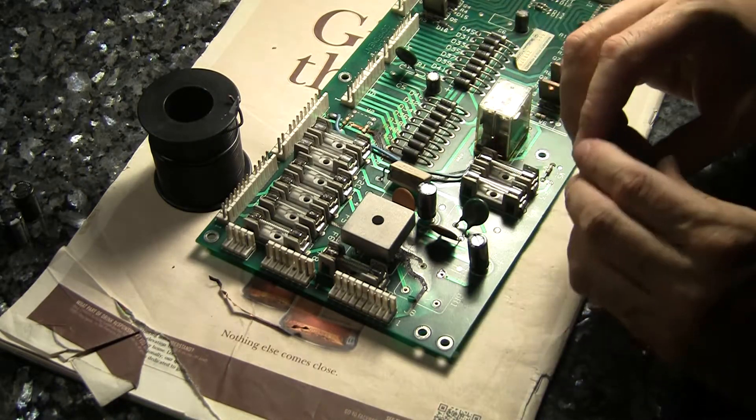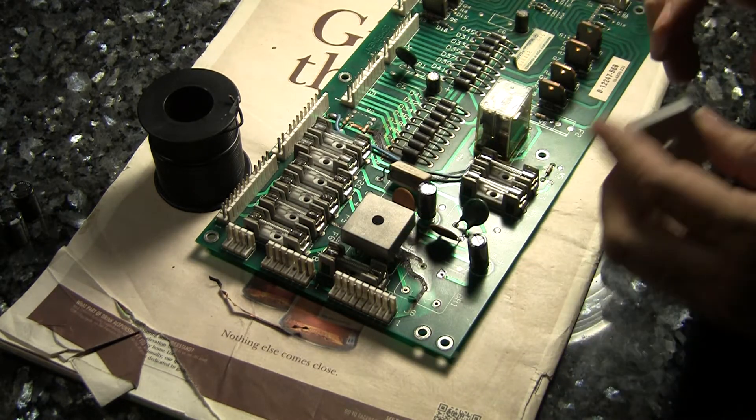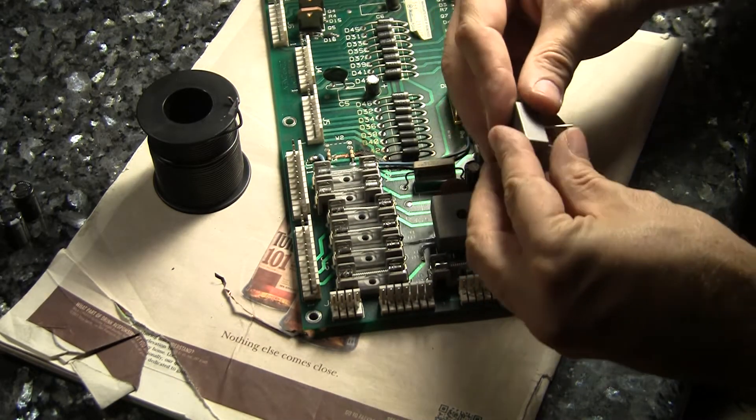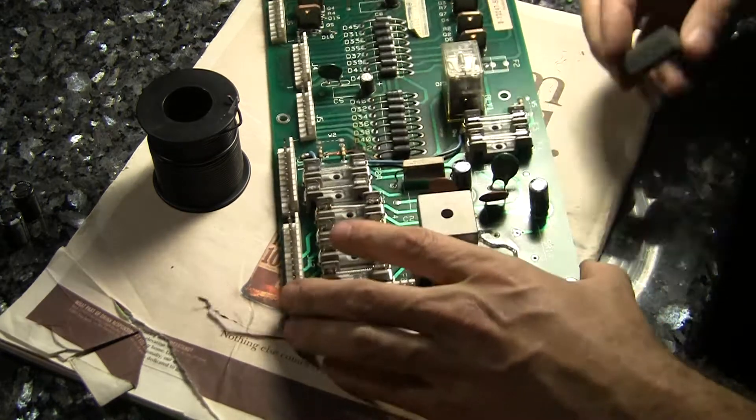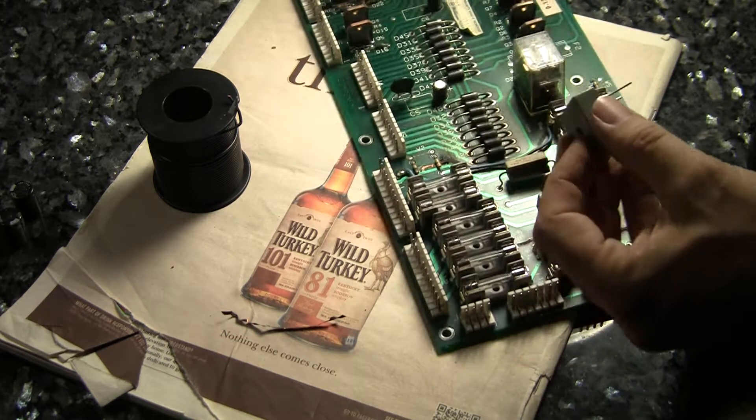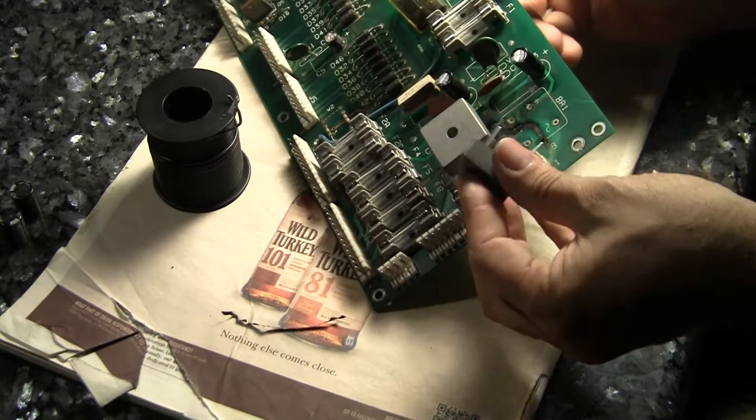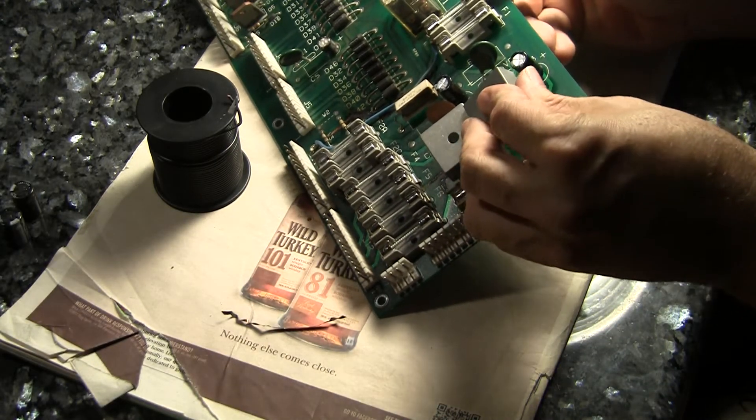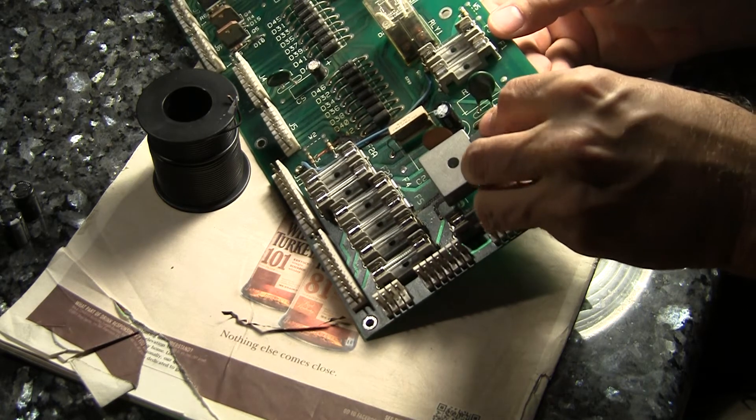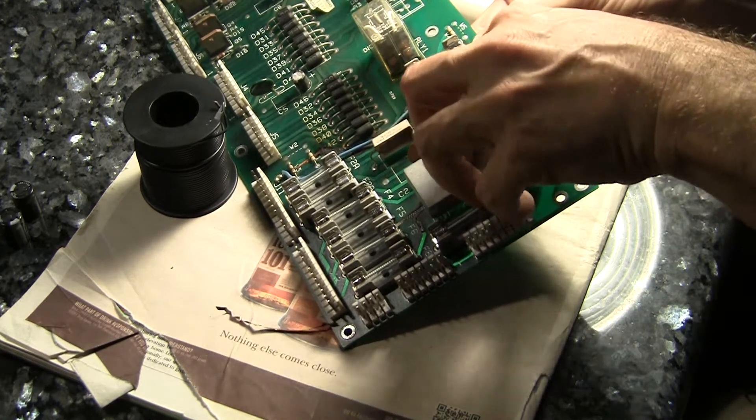So now I'm going to take this bridge rectifier, which is actually rated higher than the one that was in the board. This one's 400 volts, the other one was 200. And I'm setting it off from the board a little bit so that it should cool better. Get all these holes to line up. There we go.